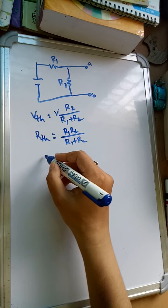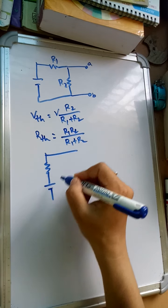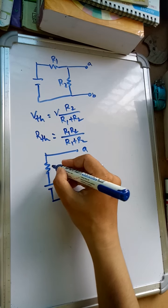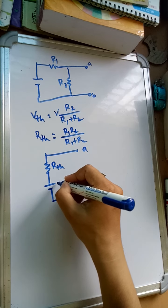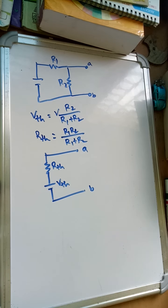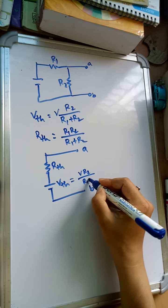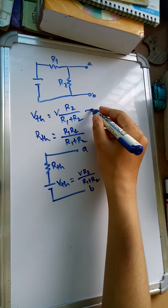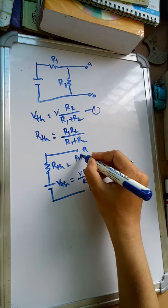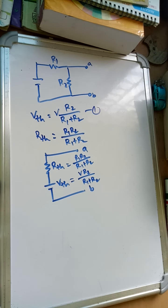So this is the equivalent resistance. Now hence the equivalent circuit, Thevenin's equivalent circuit, it may be represented as one resistance, one voltage source, and this is terminal A, terminal B. This R is Rth and this is Vth. The values you can represent: Vth will be V into R2 divided by R1 plus R2, this expression. And this Rth will be R1 into R2 divided by R1 plus R2.